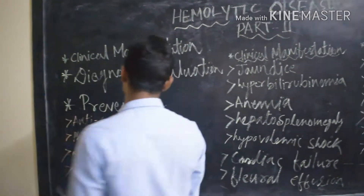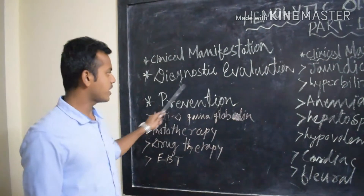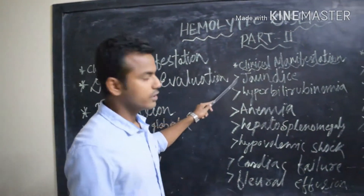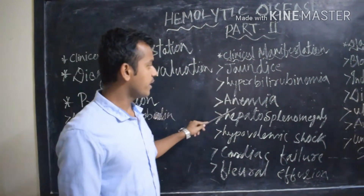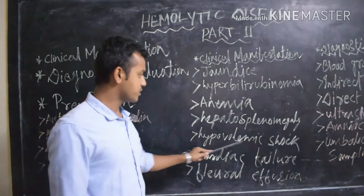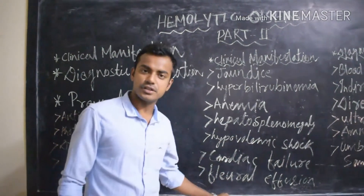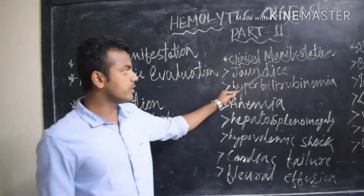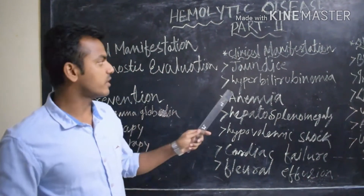In clinical manifestations, we have jaundice, hydropic anemia, hepatosplenomegaly, hypovolemic shock, cardiac failure, and pleural effusion.